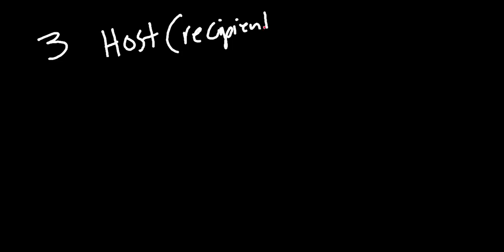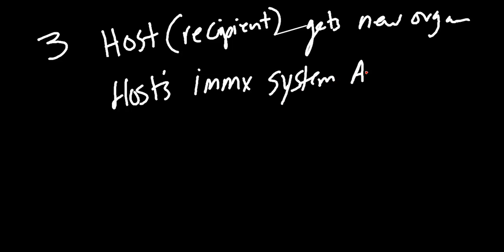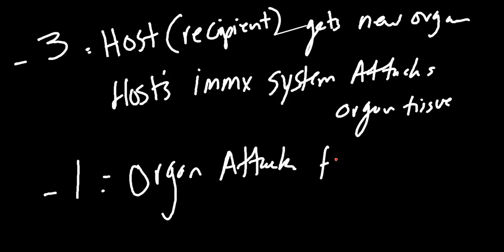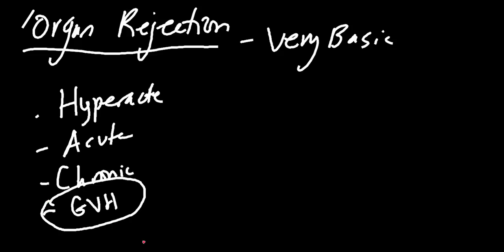So to recap: we've talked about three types where the host or recipient gets a new organ and the host's immune system attacks that organ. But now there's one type where the organ attacks the host — and that's graft versus host disease, which I alluded to earlier. Let's explain what that means.